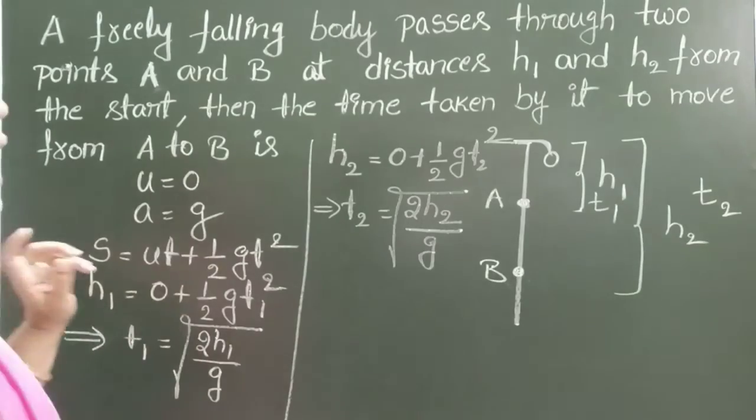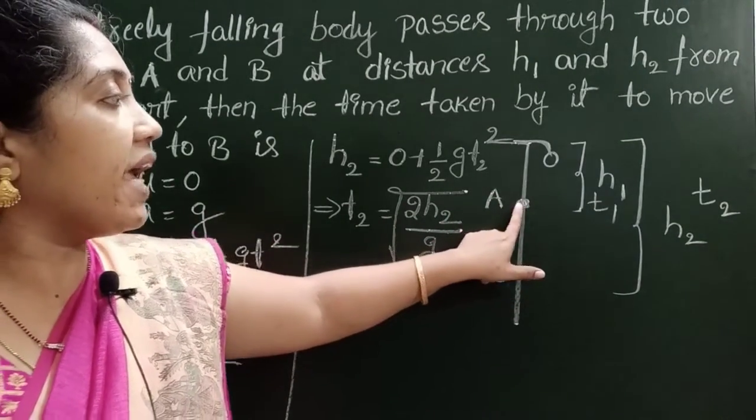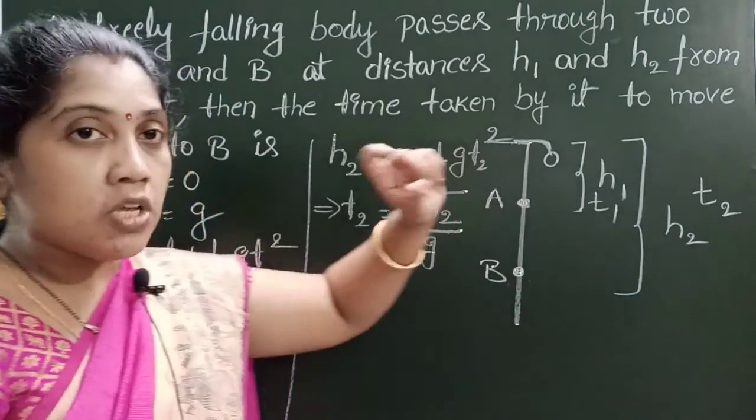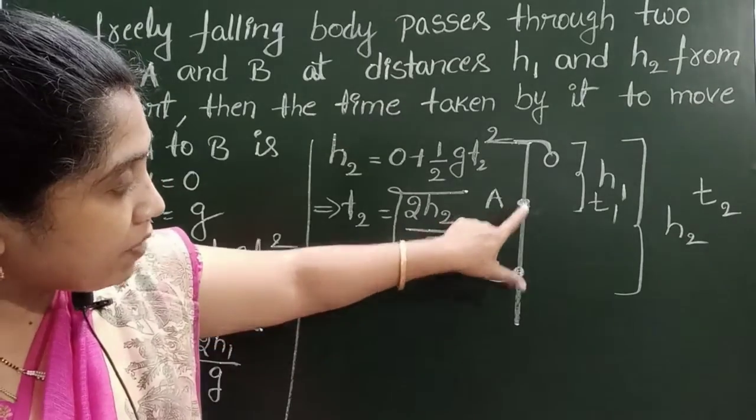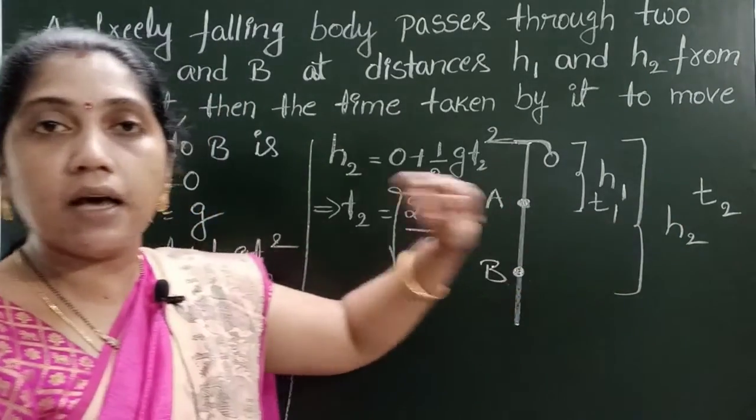So we want the time to reach from A to B. So up to A time is T1 and up to B total time is T2. So the time from A to B is T2 minus T1.